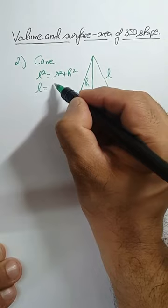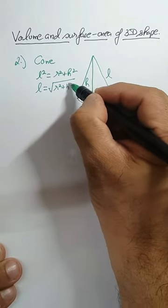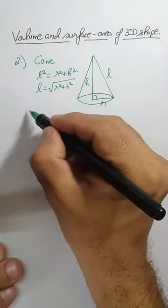So what is L? L we can find by under root of r square plus h square.